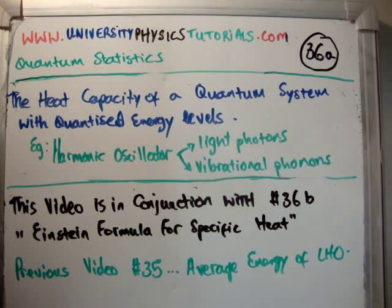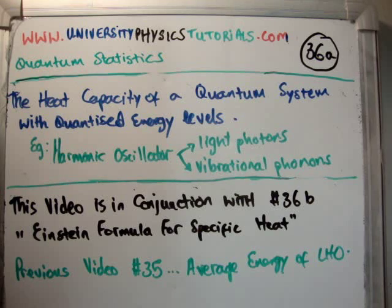Thus, with this formula and the previous formula for the average energy we're able to get all the information we need about vibrational phonons and light photons. This video is in conjunction with video number 36B entitled the Einstein formula for the specific heat of a body. The previous video to this is number 35 where I calculated the average energy of a quantum system with quantized energy levels.